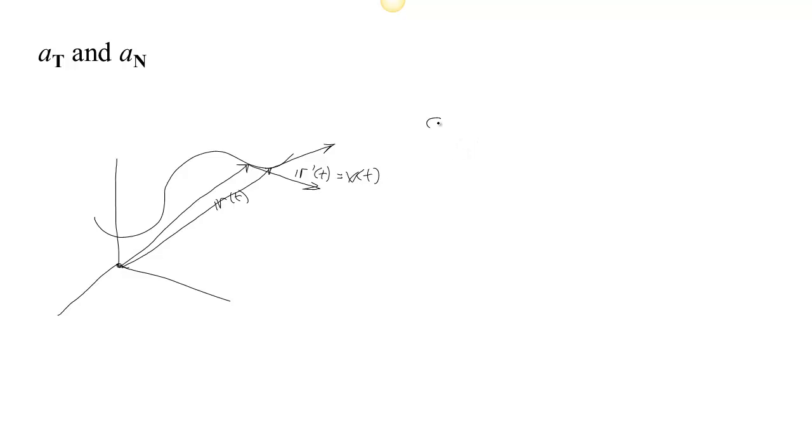So the acceleration, which is the change in velocity, turns out will consist of two parts: a part that is tangential to the curve, which we'll call a sub T, and a part that is normal to the curve, a sub N.